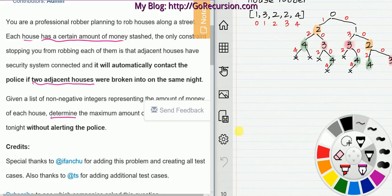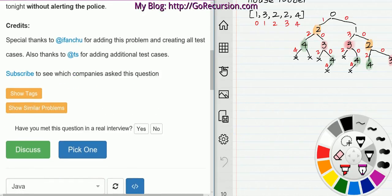For this problem, for example we have the given array here, we start from index 0. Each step we have two options. Option one is to rob that house. If we rob that house...